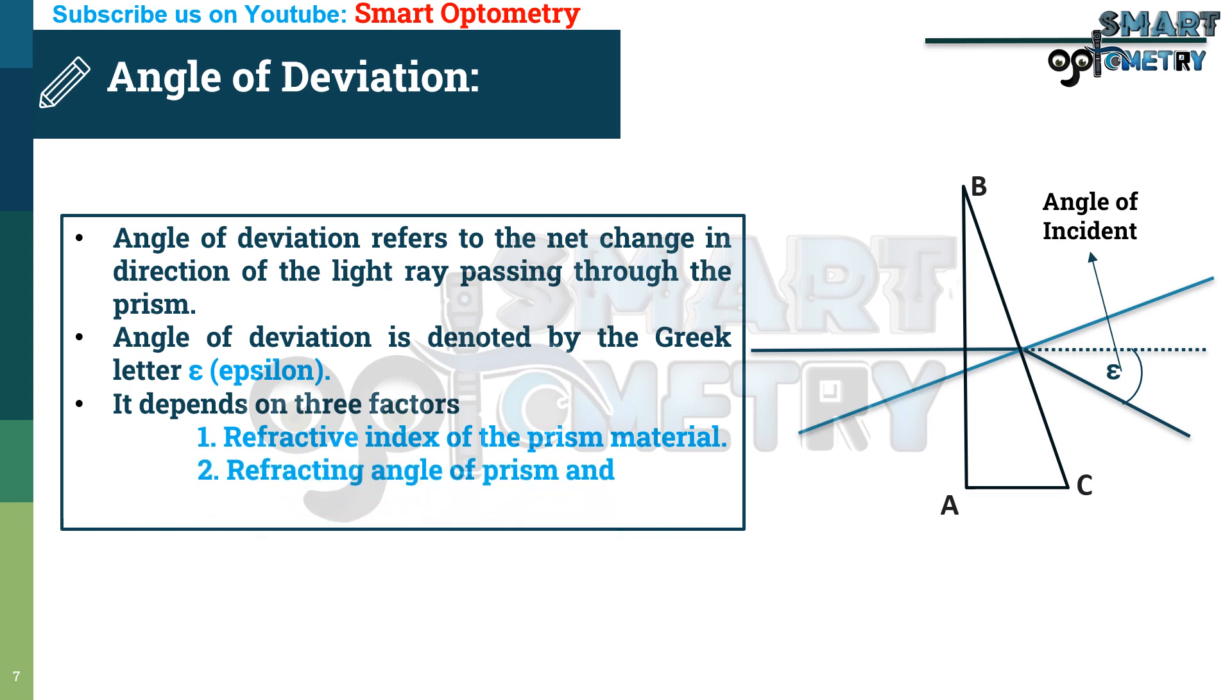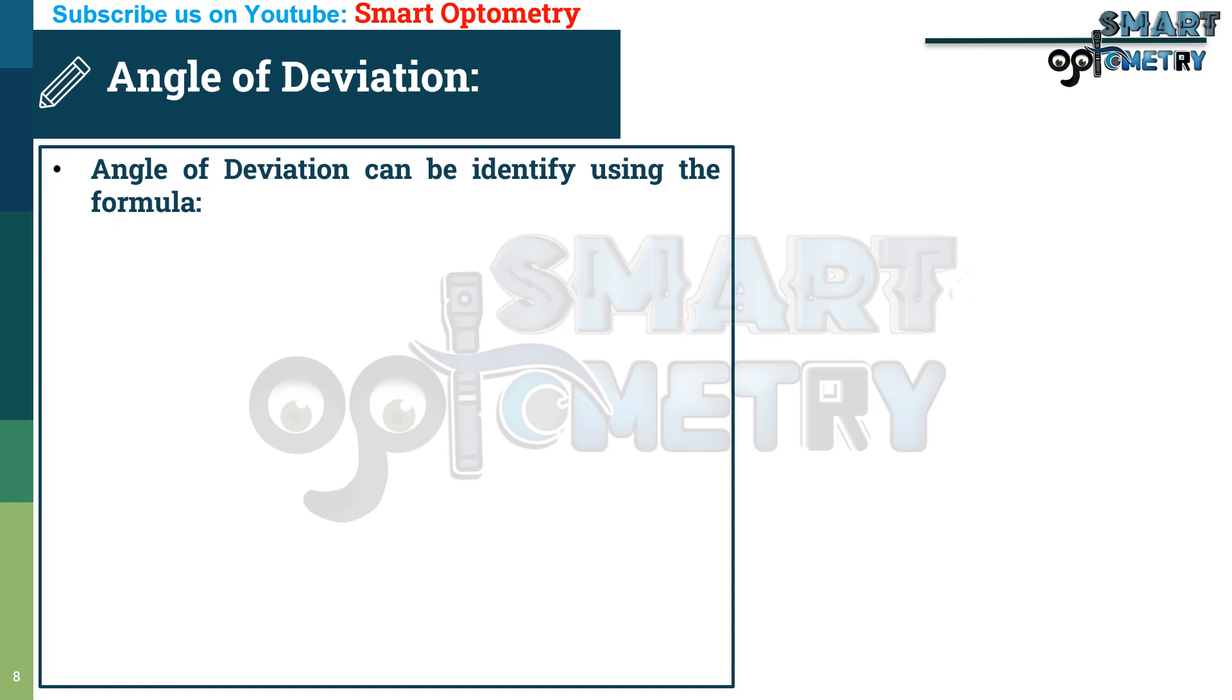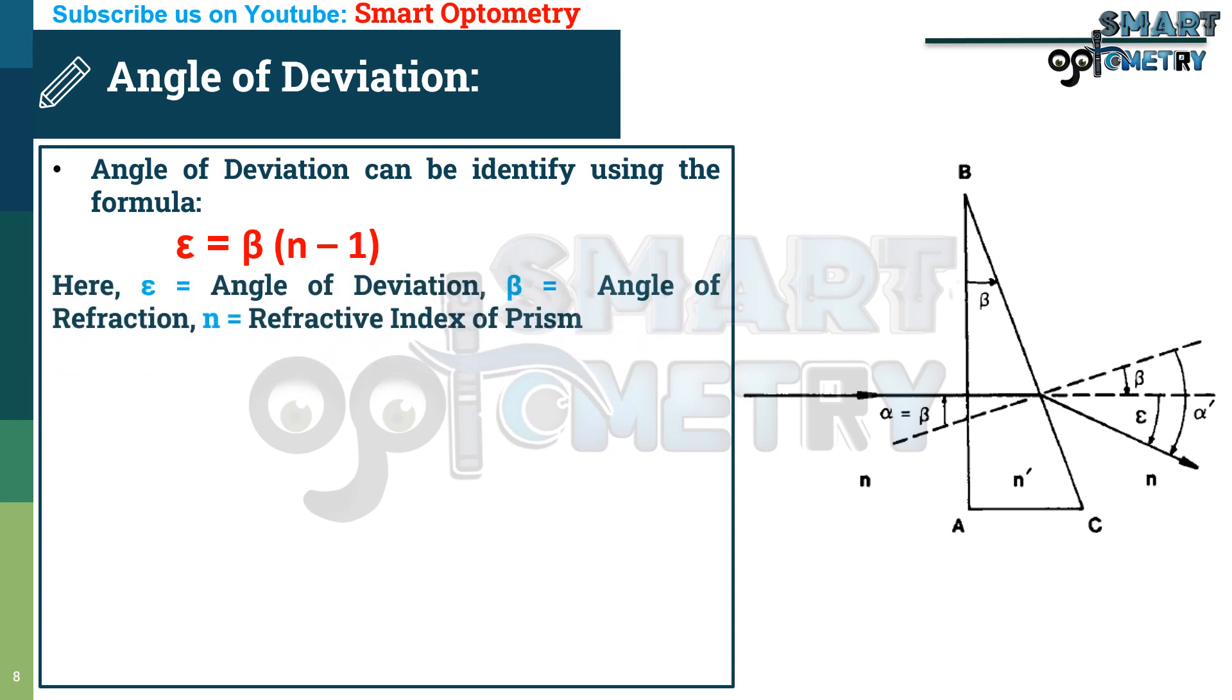One, refractive index of the prism material. Two, refracting angle of prism. And three, angle of incidence of the ray. Angle of deviation can be identified using the formula epsilon equal to beta multiplied by n minus 1. Here epsilon is angle of deviation, beta is angle of refraction, and n is refractive index of the prism.